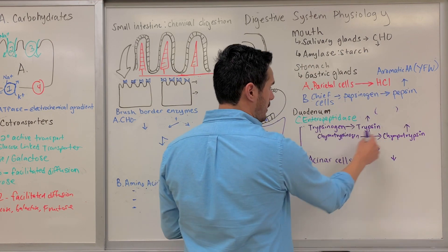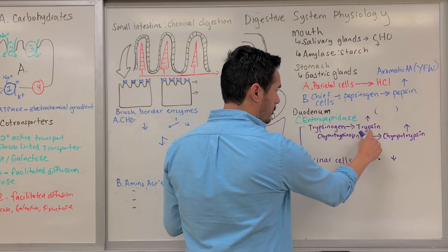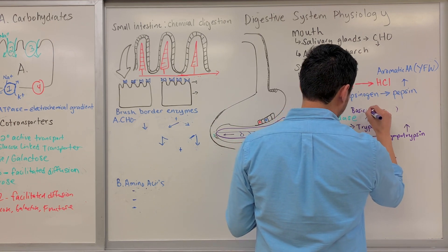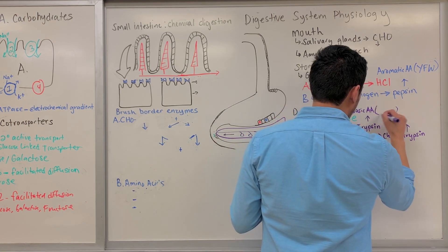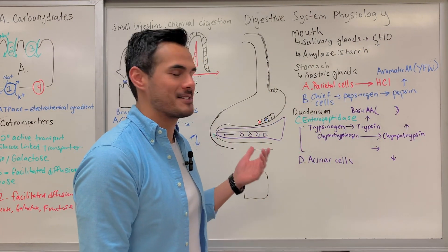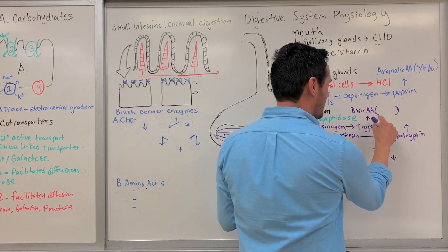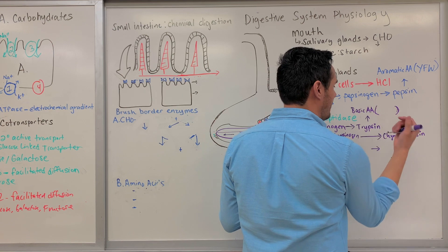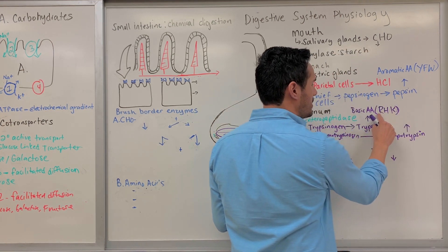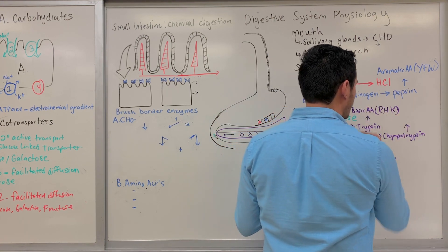Both of these are different — they cleave at specific sites. For trypsin, its target is basic amino acid residues. The specific basic amino acids are R, H, and K: arginine, histidine, and lysine. All of these are basic amino acids.